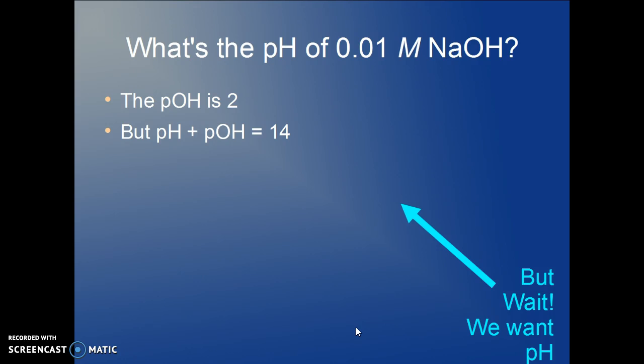The pH plus pOH is equal to 14. That's because the hydrogen ion concentration times the hydroxide ion concentration is 10⁻¹⁴. So the pH must be 14 minus 2 or 12.